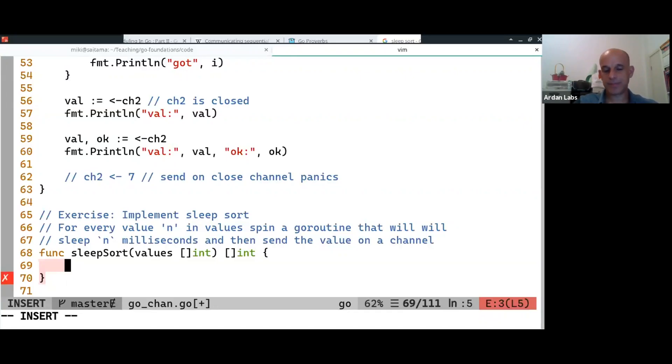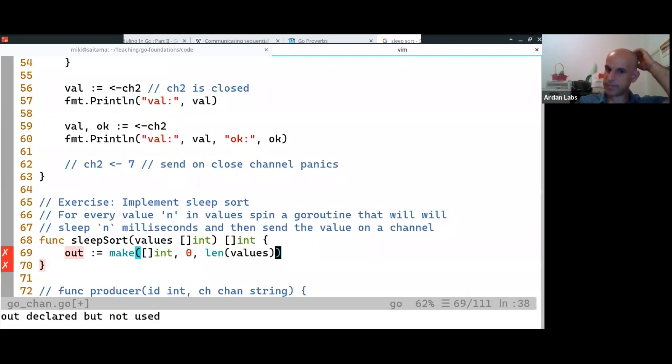Okay, let's have a look. I know that I need the output to be a slice of integers, and I'm going to do this trick of starting with a zero-size slice, but has the underlying array which is full, so I don't do a lot of intermediate allocations.